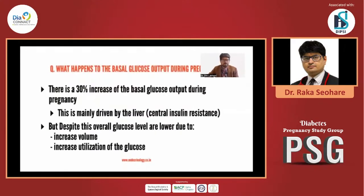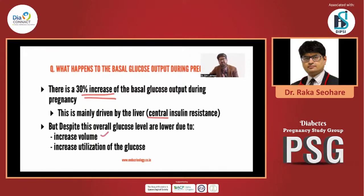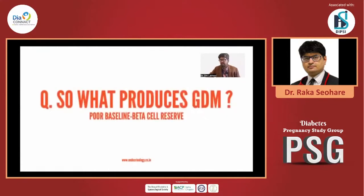What happens to glucose output during pregnancy? In fact, glucose output is also increased during pregnancy — there is a 30% increase of glucose output in pregnancy. This is mainly driven by the liver and is what is known as central insulin resistance. But despite this increased basal glucose output, overall glucose levels are lower because of increased utilization of glucose. So overall during pregnancy, there is a state where there is both increase of glucose as well as increase of insulin — it is a state of insulin resistance as described.